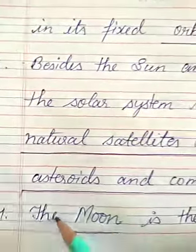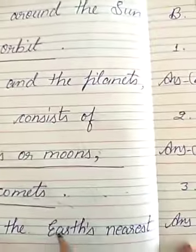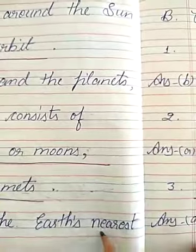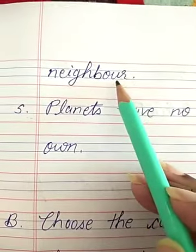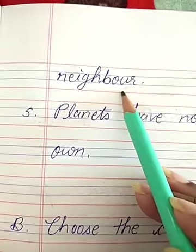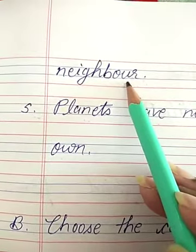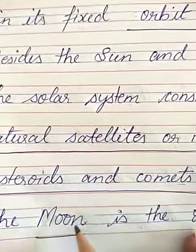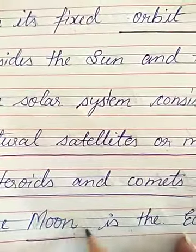Number 4. The dash is the Earth's nearest neighbor. So, who is the closest to the Earth? That is the answer — Moon. Moon is the nearest neighbor of the Earth. M-O-O-N, Moon.